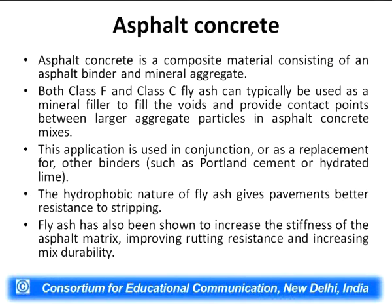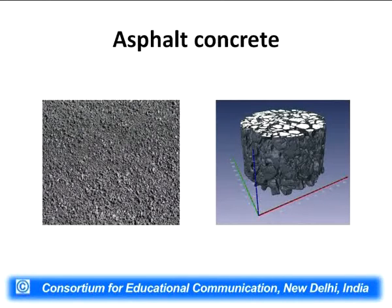Asphalt concrete is a composite material consisting of an asphalt binder and mineral aggregate. Both Class F and Class C fly ash can typically be used as a mineral filler to fill the voids and provide contact points between larger aggregate particles in asphalt concrete mixtures. This application is used in conjunction with or as a replacement for other fillers such as boiler cement or hydrated lime. The hydrophobic nature of fly ash gives pavement better resistance to stripping. Fly ash has also been shown to increase the stiffness of the asphalt matrix, improving rutting resistance and increasing mix durability. This is a picture of asphalt concrete produced using fly ash.